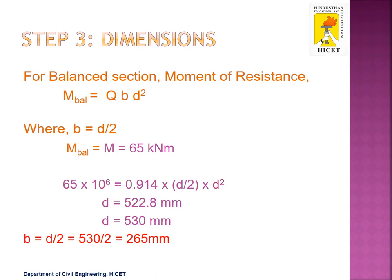Next, we find the dimensions and area of tension reinforcement for the balanced section. The moment of resistance for a balanced section is Q into B into D², where Q is 0.914. Since B is not directly given, we substitute B as d divided by 2 as per the given condition. The moment is 65 kNm, which equals 65 into 10⁶ N·mm. Substituting all values, the effective depth d is calculated as 522.8 mm, which is rounded off to 530 mm.